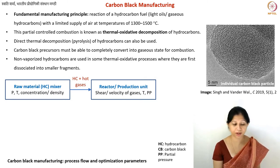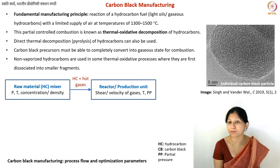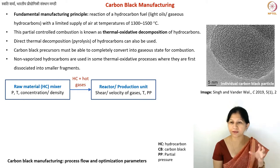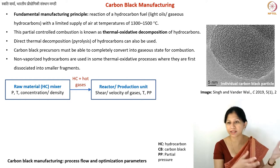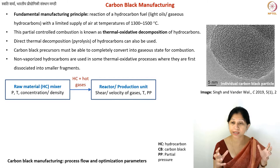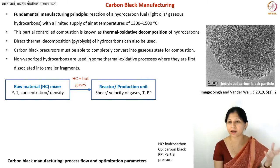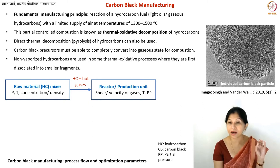From the mixing chamber, the hydrocarbon mixed in hot gases goes into the next chamber — the actual reactor or production unit. These reactors can be of different types and different scales. Carbon black production plants can produce hundreds of thousands of tons per year. There are four or five different ways of making carbon black. Based on the process, the reactor design can differ — you may have a furnace, a reactor, or a fluidized bed reactor similar to what is used in activated carbon production.